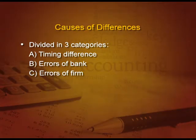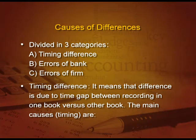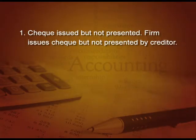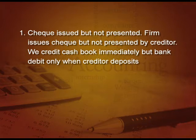What is timing difference? It means the difference arising due to the time gap between recording in one book versus the other book. The main causes: first, cheque issued but not presented — the firm issues the cheque, but it is not presented by the creditor. When we issue the cheque, we credit the cash book immediately, but the bank will debit only when the creditor deposits it and it comes to the bank for clearance. So there is a delay — this is timing difference.